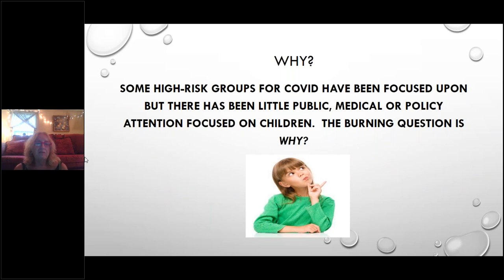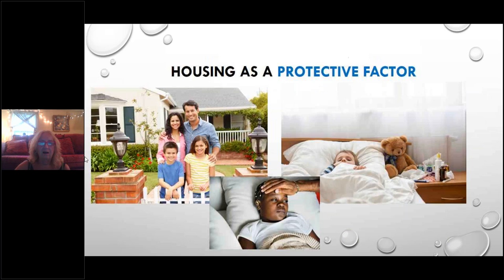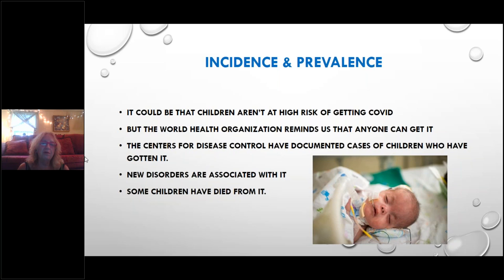Some high-risk groups for COVID-19 have been identified, especially elder people or those in nursing homes, but there has been very little public attention or policy initiatives focused on children. As a medical sociologist who specializes in pediatrics, I have to ask the question of why is this the case? If we look at incidence and prevalence, I think we have a data problem. There's not really as much data on children as we would benefit from in order to develop the right kinds of strategies.